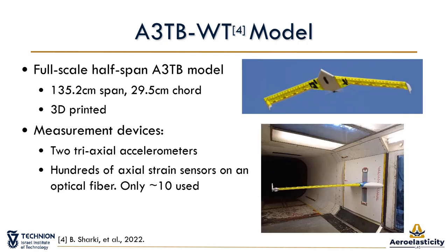The proposed system identification and flutter prediction were tested on the wind tunnel test model of the A3TB wing. The A3TB is a flying-wing configuration developed by undergraduate students at the Technion and intended for aeroelastic research and technology implementation. The wing is instrumented with two tri-axial accelerometers mounted on the front and rear spars, measuring acceleration at the wing tip, and with fiber optic sensors providing local axial strain at hundreds of points along the spars. Structural responses were recorded for two minutes at 15 stationary subcritical airspeeds ranging from 16 to 39 meters per second in two separate occasions.